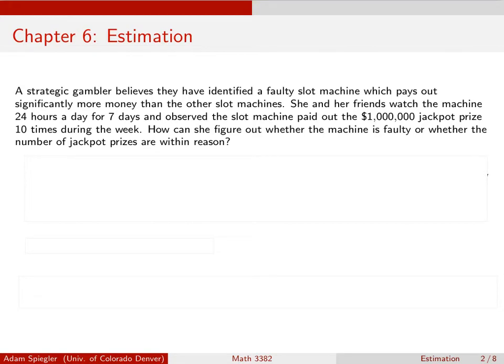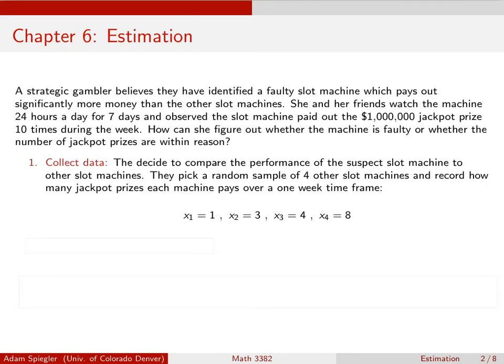Well, we would need to know what the underlying distribution is for the number of times a slot machine pays out this grand prize. So step one in this process would be to collect some data. They stake out four other slot machines in the casino. Each person watches a slot machine, and over the course of the week...